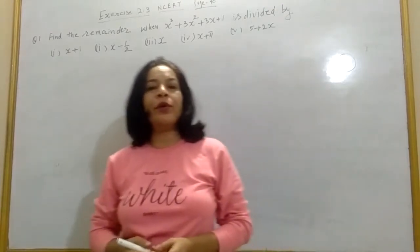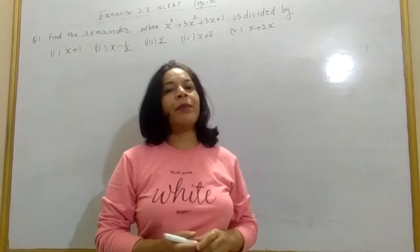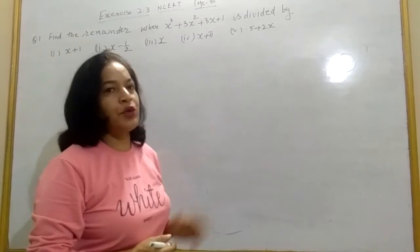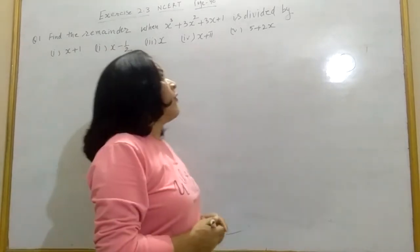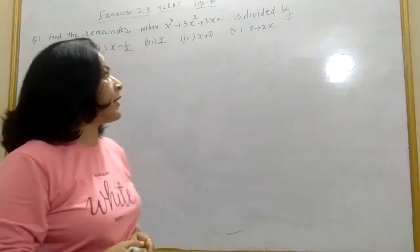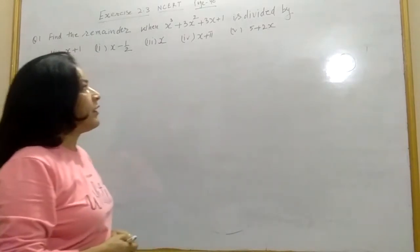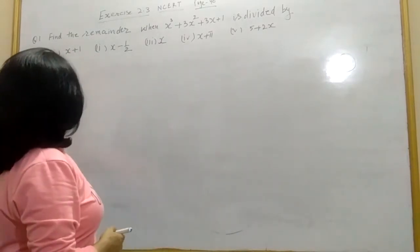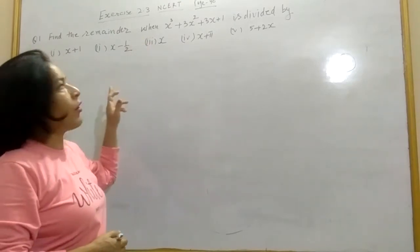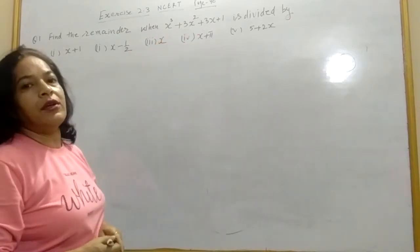Students, in the previous video we had learnt what is the Remainder Theorem — remainder theorem ka pura detail meh bataye hai. Today we will discuss Exercise 2.3: find the remainder by using the Remainder Theorem. Here we have polynomial x³ + 3x² + 3x + 1. In question 1, we have 5 parts; the polynomial and dividend are the same for all parts, and we are going to change the divisor.